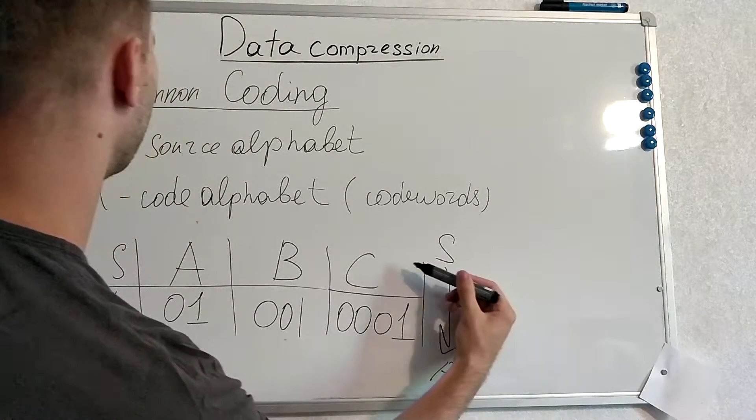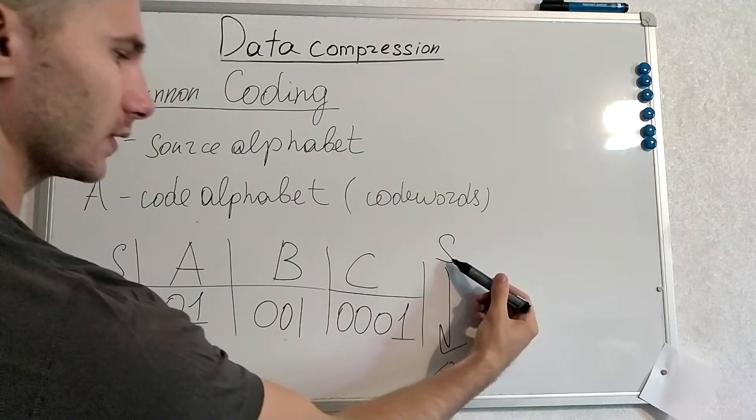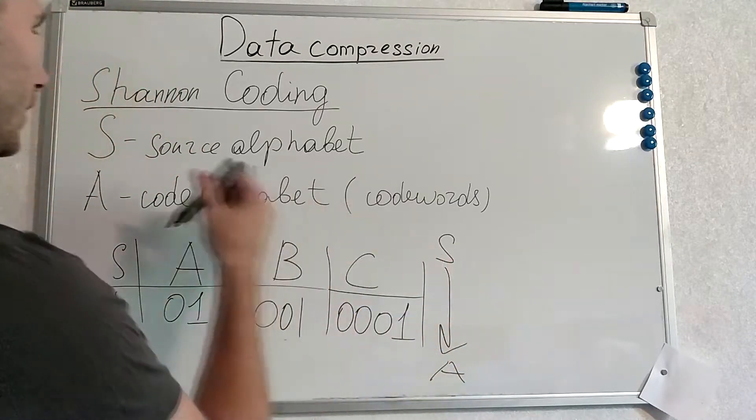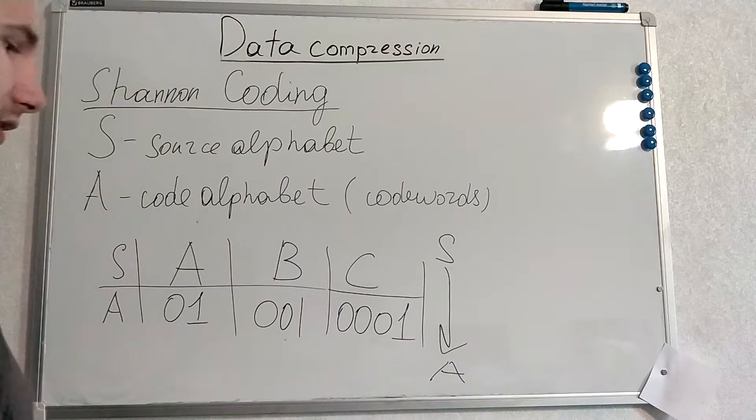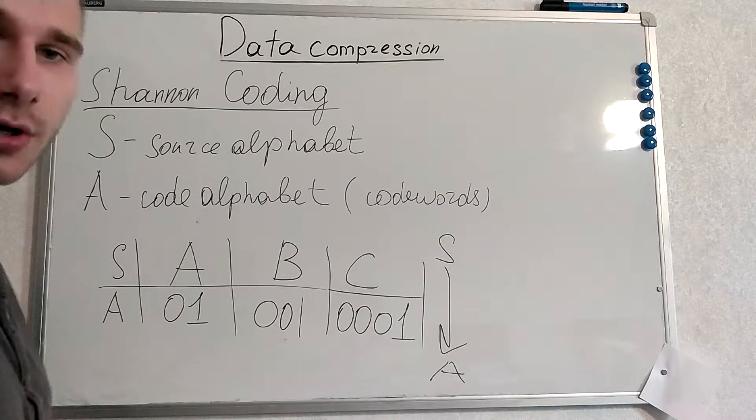Because it does this process. For each symbol in our source alphabet we make another corresponding symbol from the code alphabet.